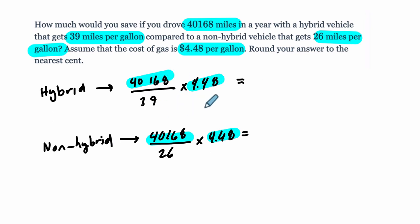Well, right here, we can see that this is going to work because we can rewrite it as 40,168 times 4.48. Instead of dividing by 39, we can multiply by 1 over 39. And the same thing is true here. The same two first factors times, instead of dividing by 26, you can multiply by 1 over 26.